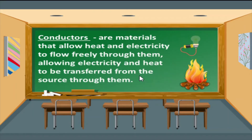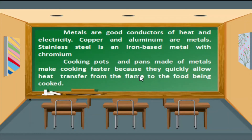Conductors are materials that allow heat and electricity to flow freely through them, allowing electricity and heat to be transferred from the source through them. Metals are good conductors of heat and electricity. Copper and aluminum are metals. Stainless steel is an iron-based metal with chromium. Cooking pots and pans made of metals make cooking faster because they quickly allow heat transfer from the flame to the food being cooked.